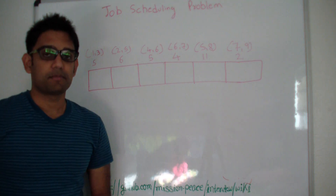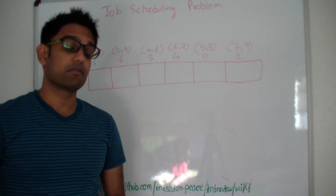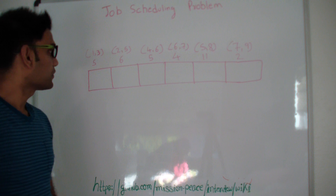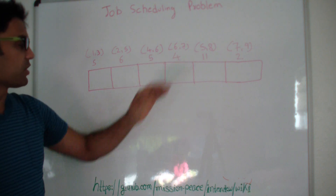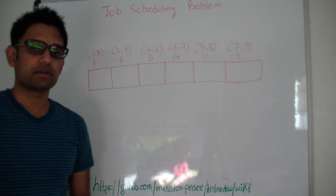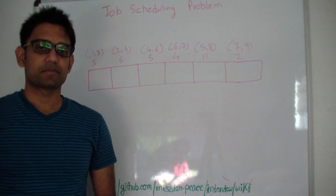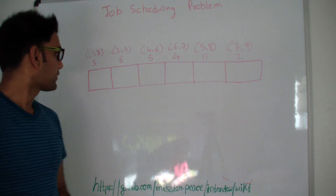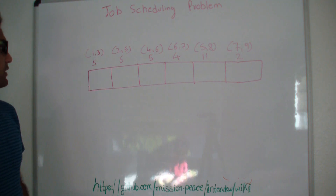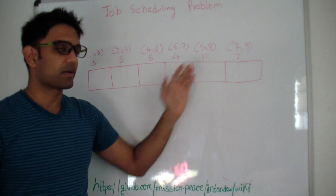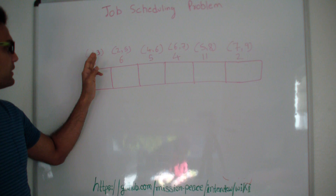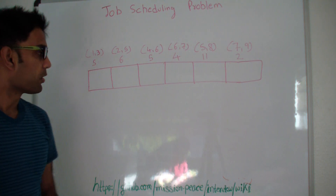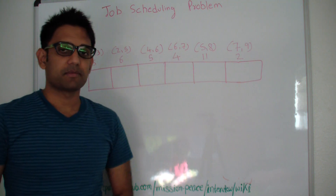So how do we solve this problem? We will use dynamic programming to solve this particular question. The first thing we do is sort the jobs by their end time in non-decreasing order. Here I've already sorted all the jobs, so the end times go: 3, 5, 6, 7, 8, and 9 — already sorted by their finish time.